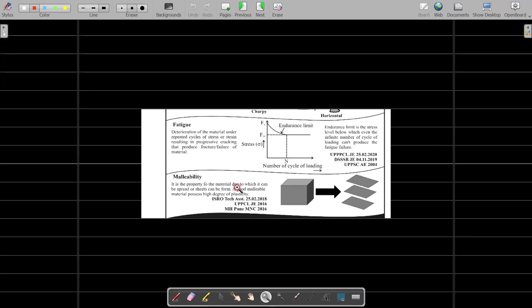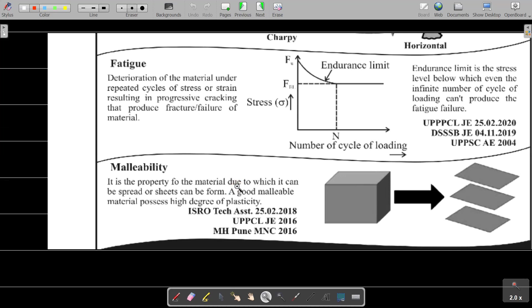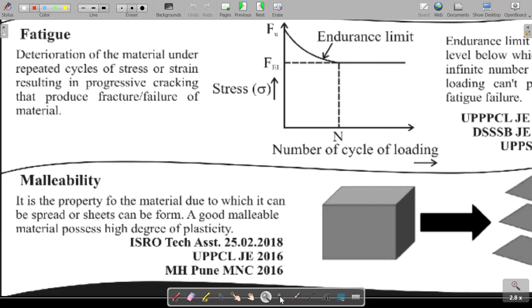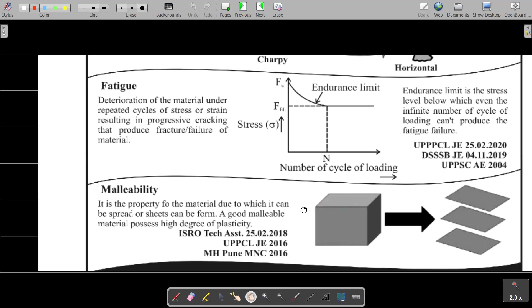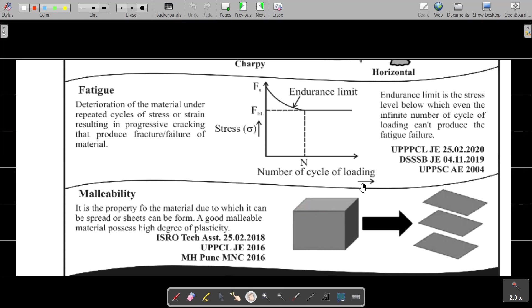Fatigue is deterioration of the material under repeated cycles of stress. If you repeatedly apply continuous load on the body, progressive cracking will occur, and that is fatigue. Endurance limit is the stress level below which even an infinite number of cycles of loading cannot produce fatigue failure.